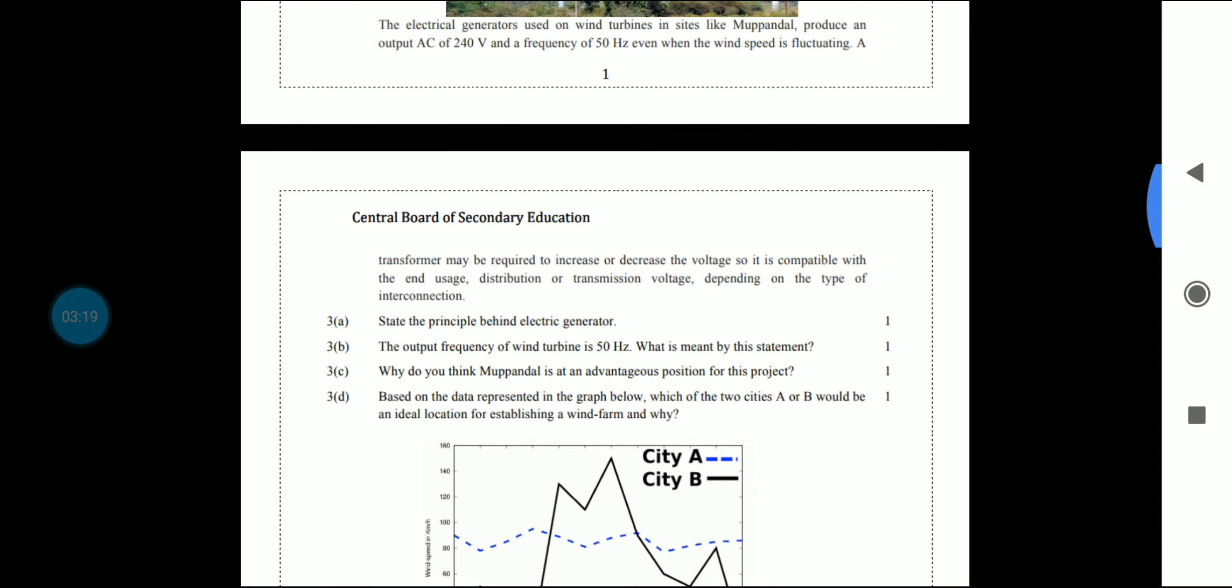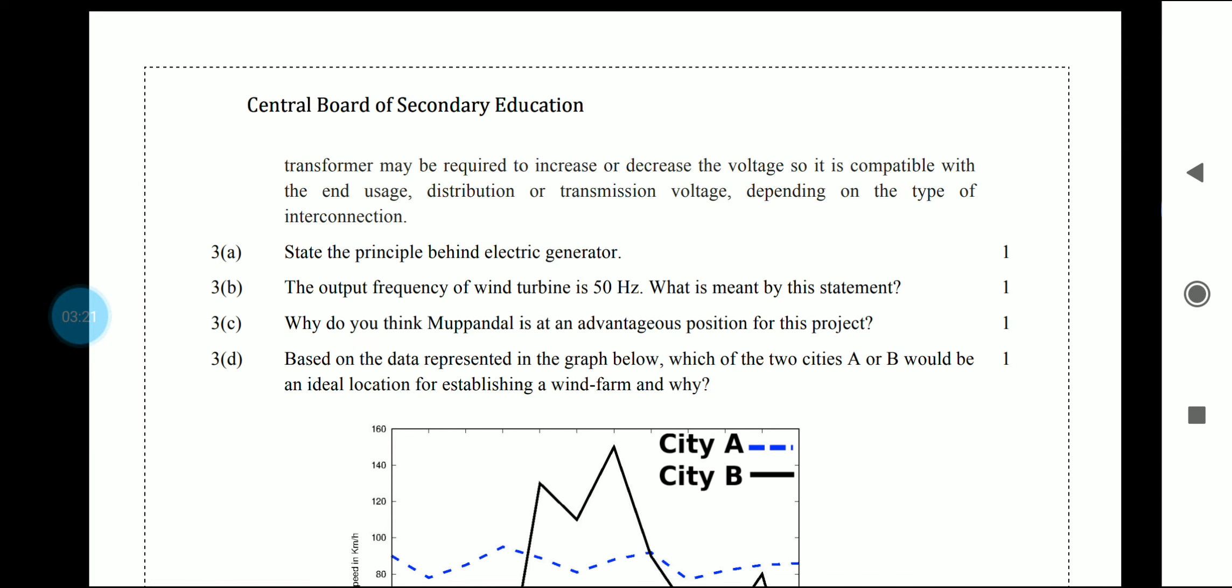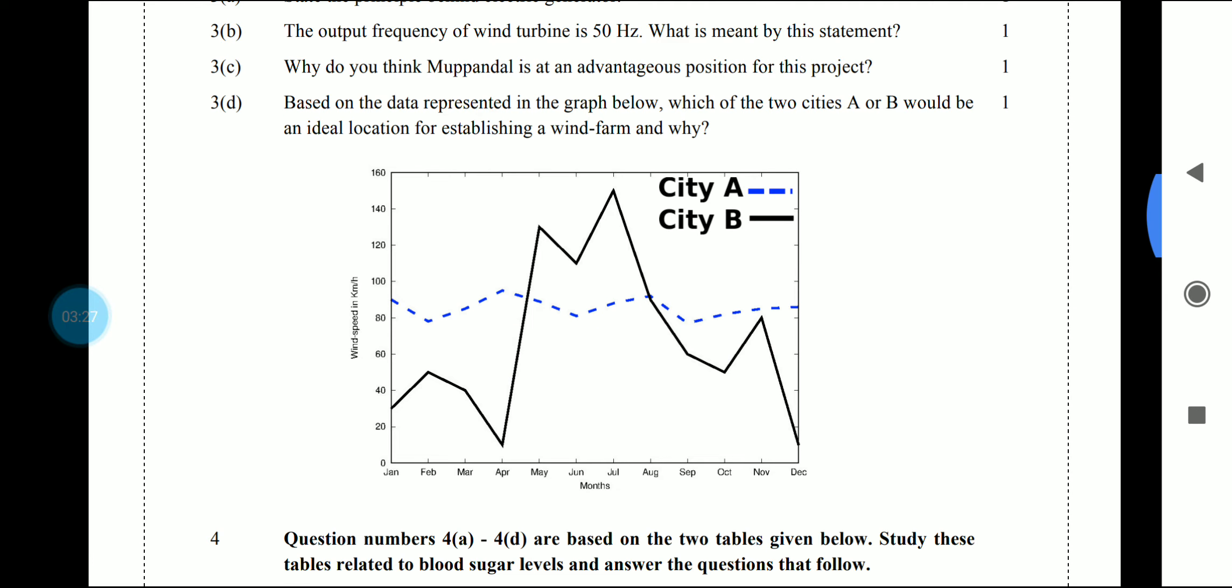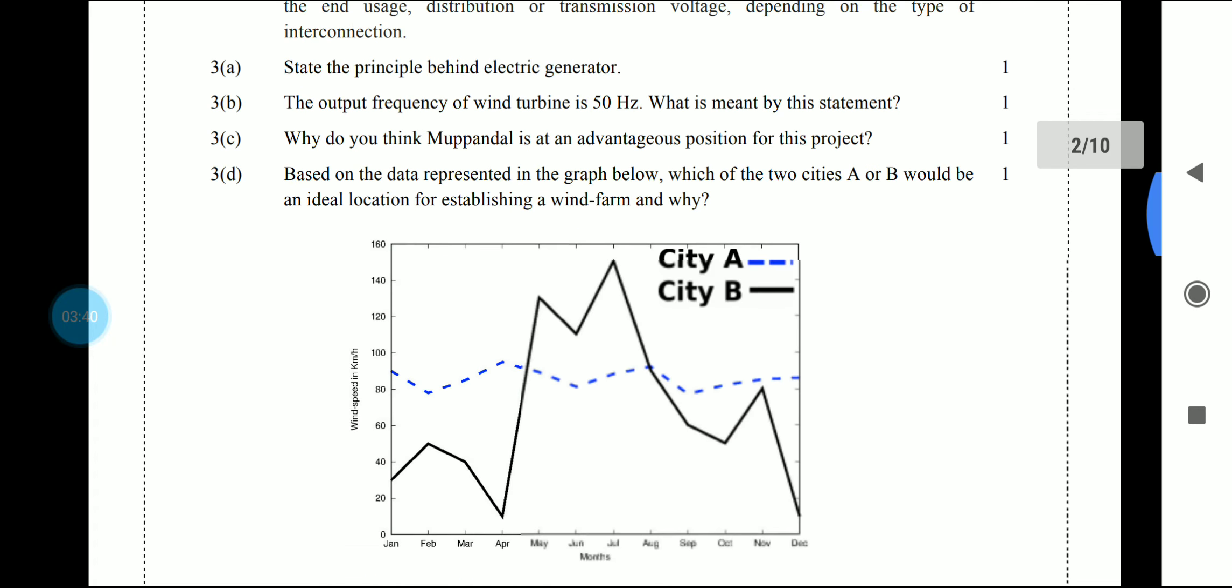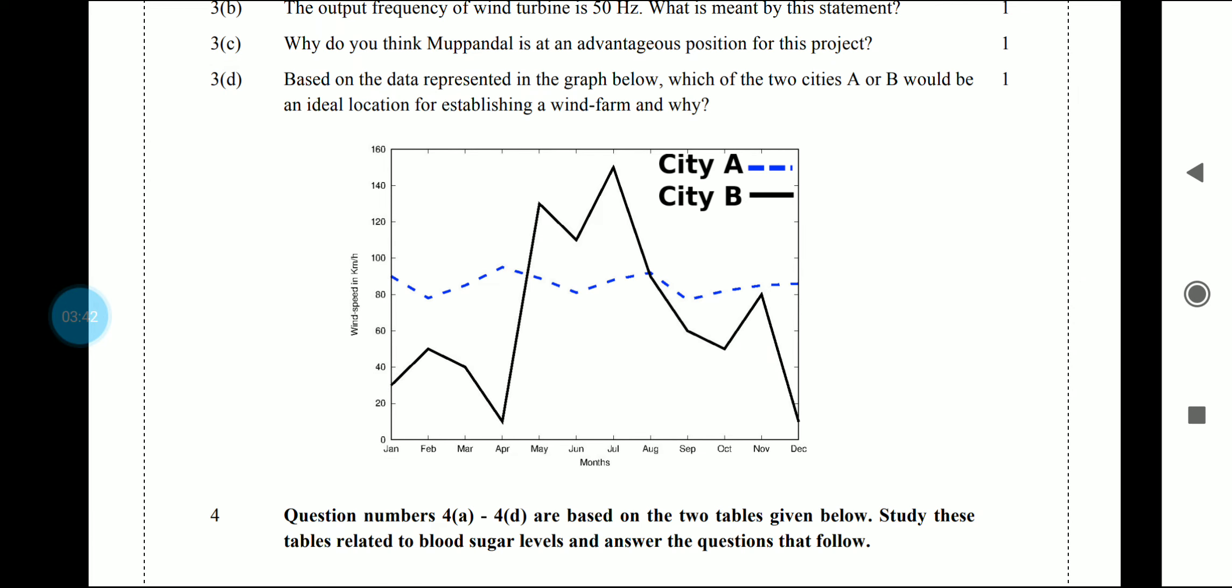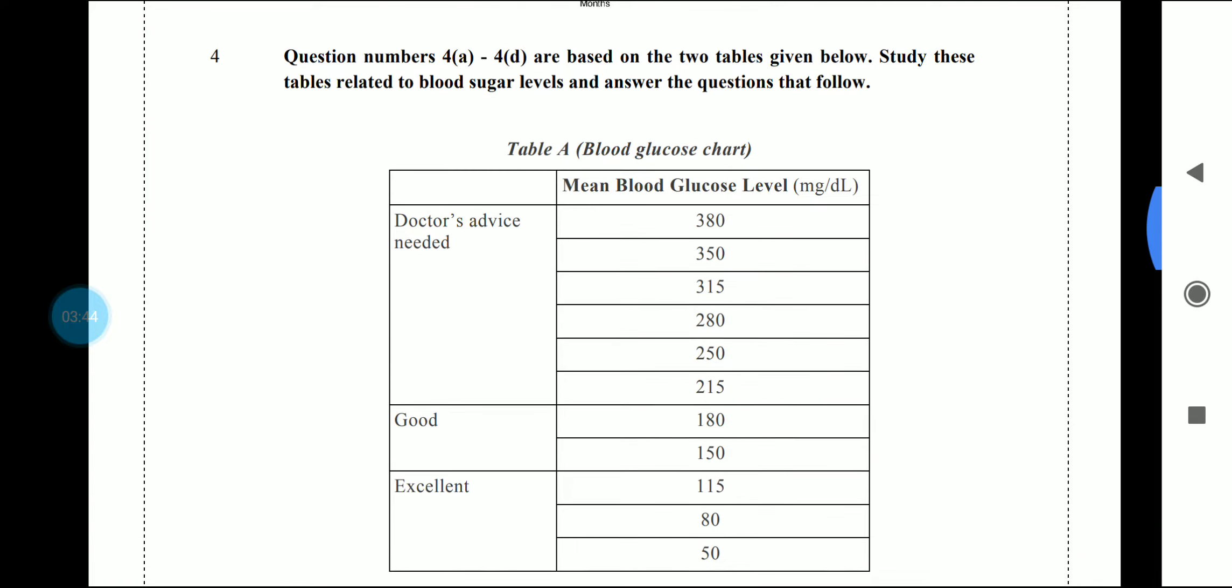The next section is the D part based on data represented in graph below. This graph is based on two cities and we have to identify which would be the ideal location for establishing a wind farm and why. If you have read and understood it, you can give the answer.